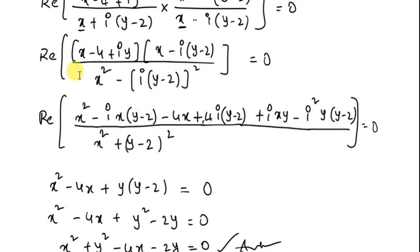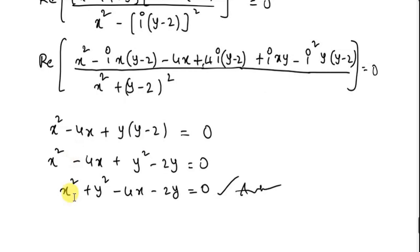Expanding the numerator: x times x gives x squared; x times minus i(y minus 2) gives minus ix(y minus 2); minus 4 times x gives minus 4x; minus 4 times minus i(y minus 2) gives plus 4i(y minus 2); iy times x gives ixy; and iy times minus i(y minus 2) gives minus i squared y(y minus 2), all equal to 0.